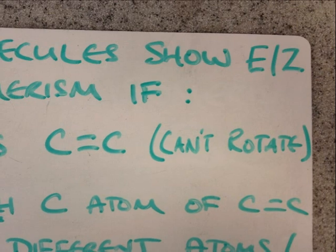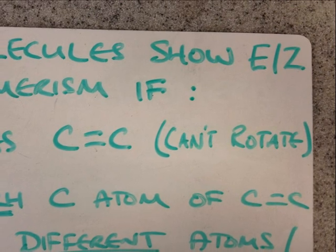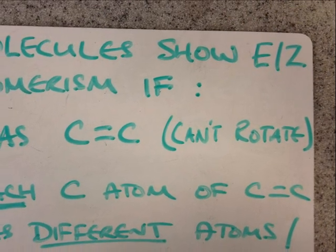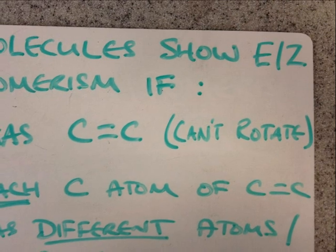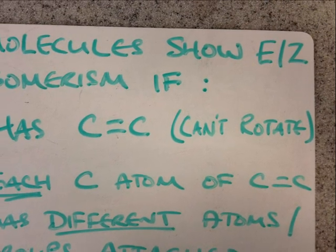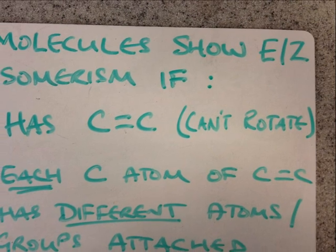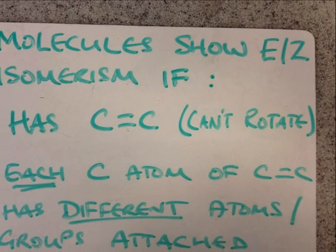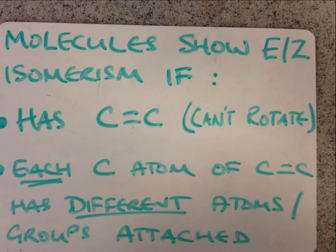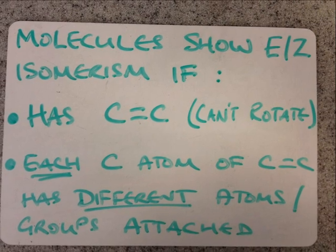To summarise, molecules show EZ-isomerism if they have carbon-carbon double bonds which can't rotate, and each carbon atom of the carbon-carbon double bond has different atoms or groups attached.